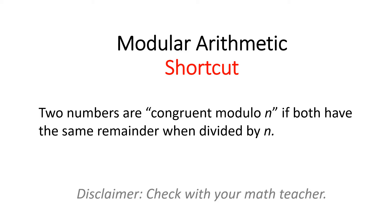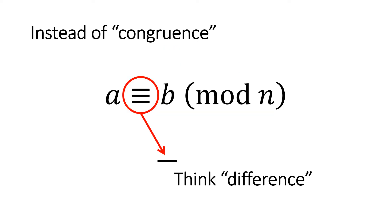Here we have the triple bar symbol for congruence. The statement here is that a is congruent to b mod n, or a is equivalent to b mod n, where mod is an abbreviation for modulus.